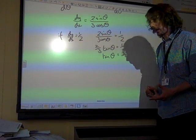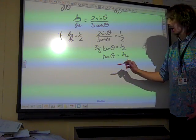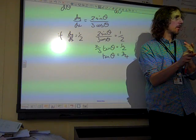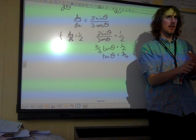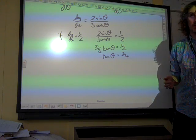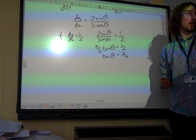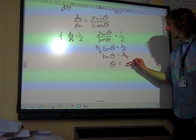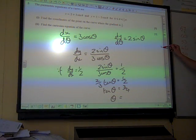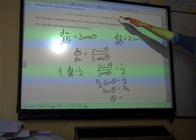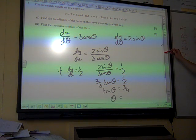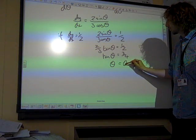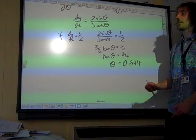Straight to the calculator, let's work out the value of theta that that gives us. Do we need to be in degrees or radians for this? Why do we have to be in radians? Because we've used calculus, we've differentiated something to do with sine theta, so we must now be in radians. We get theta being 0.644.